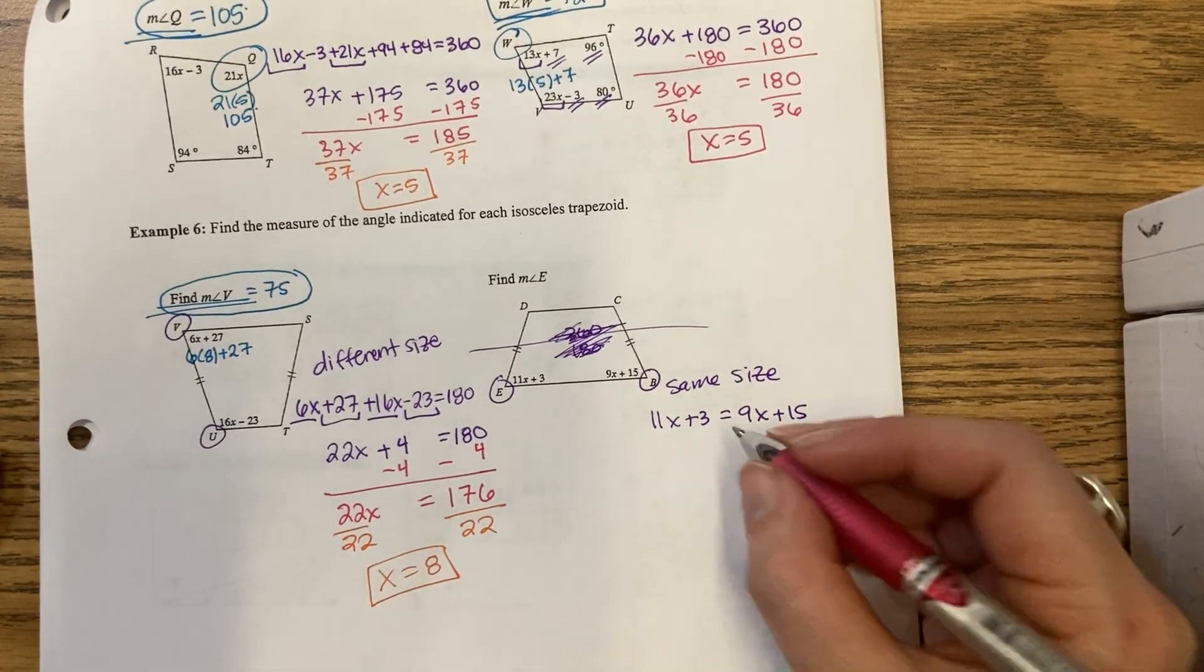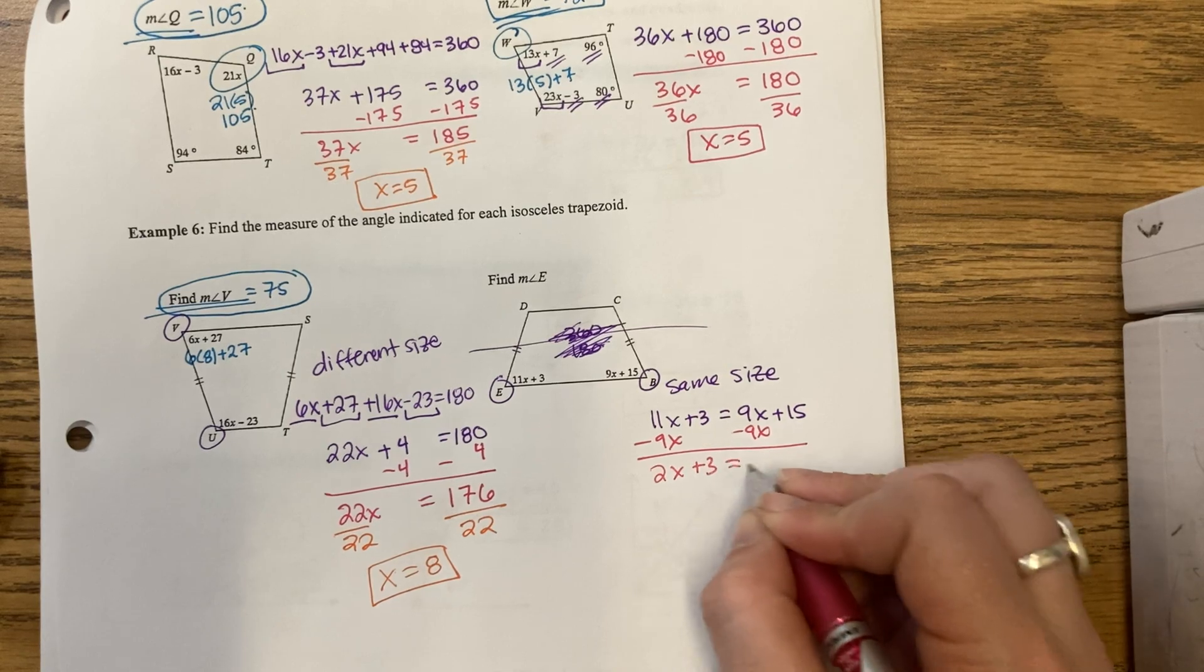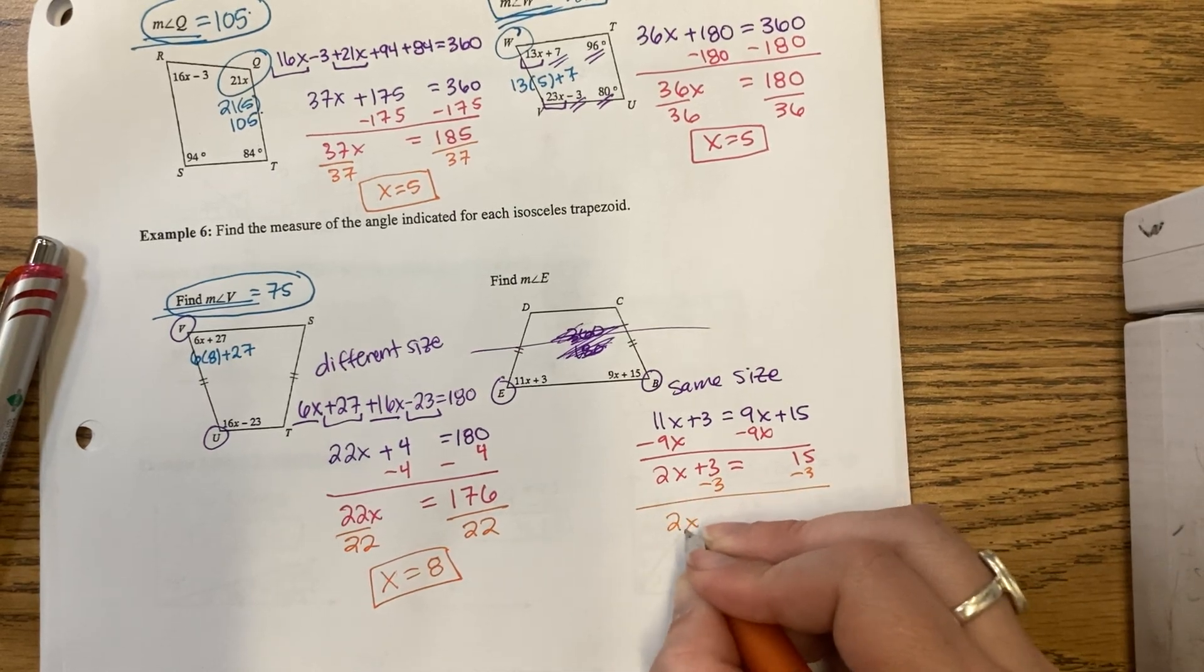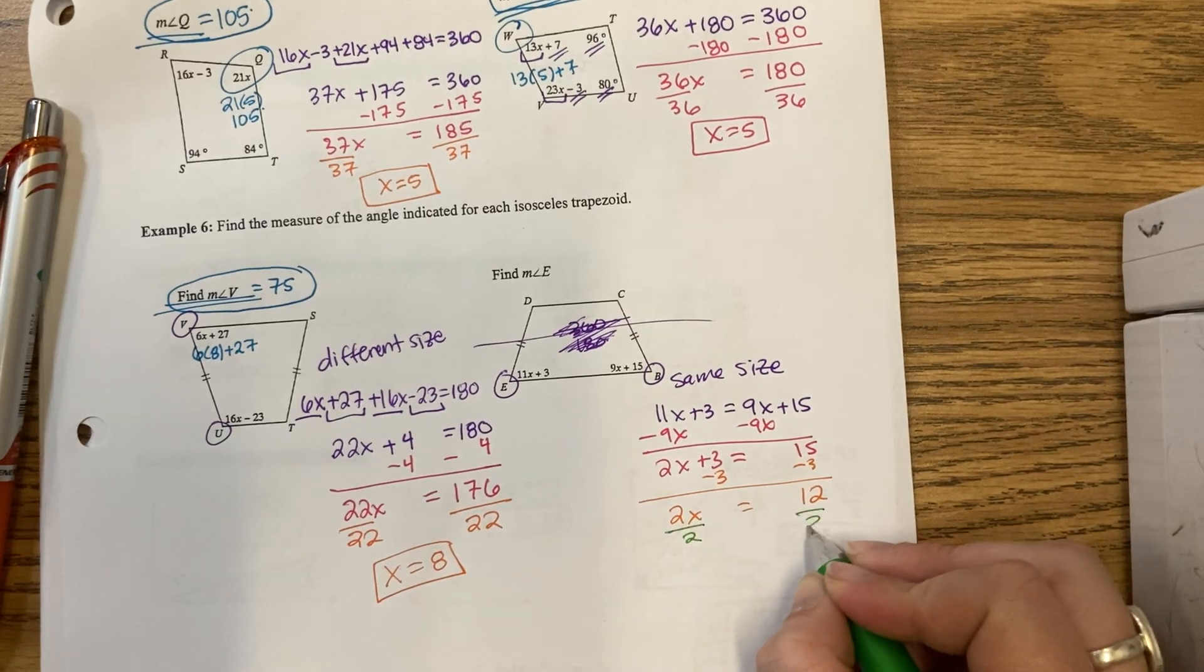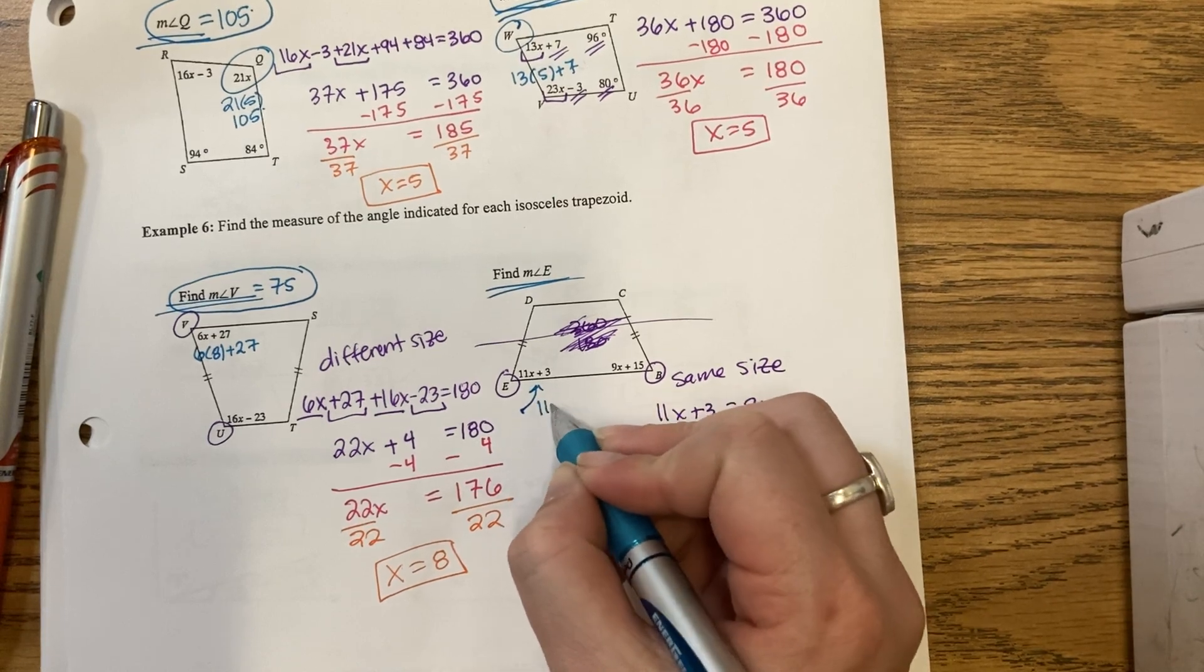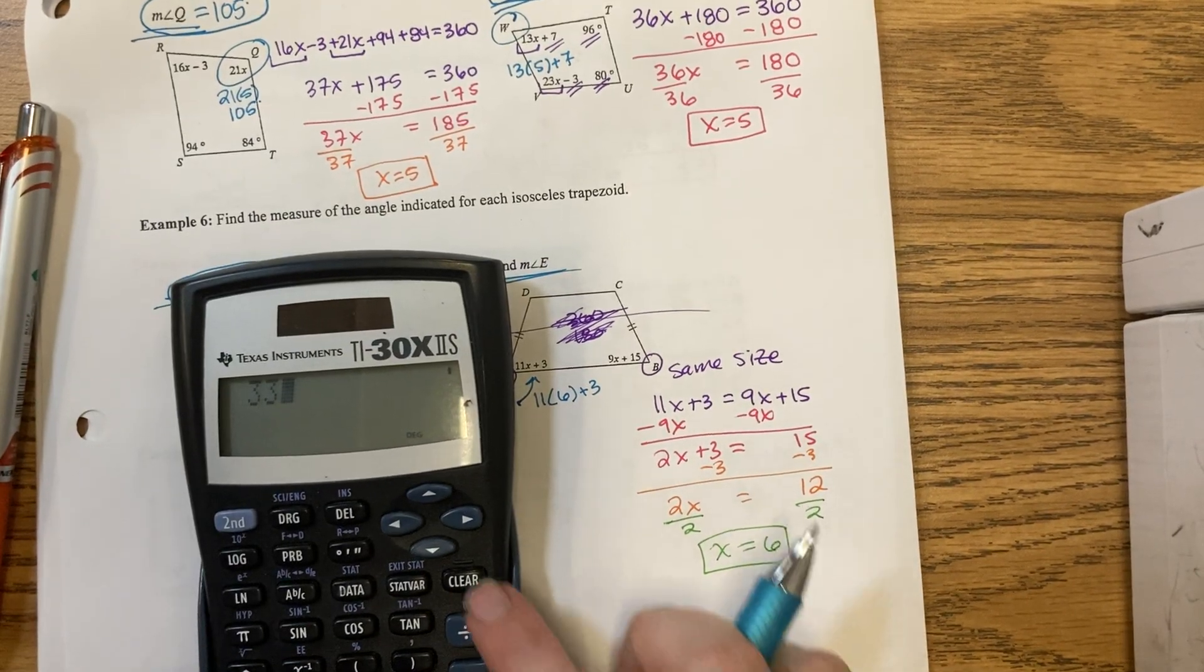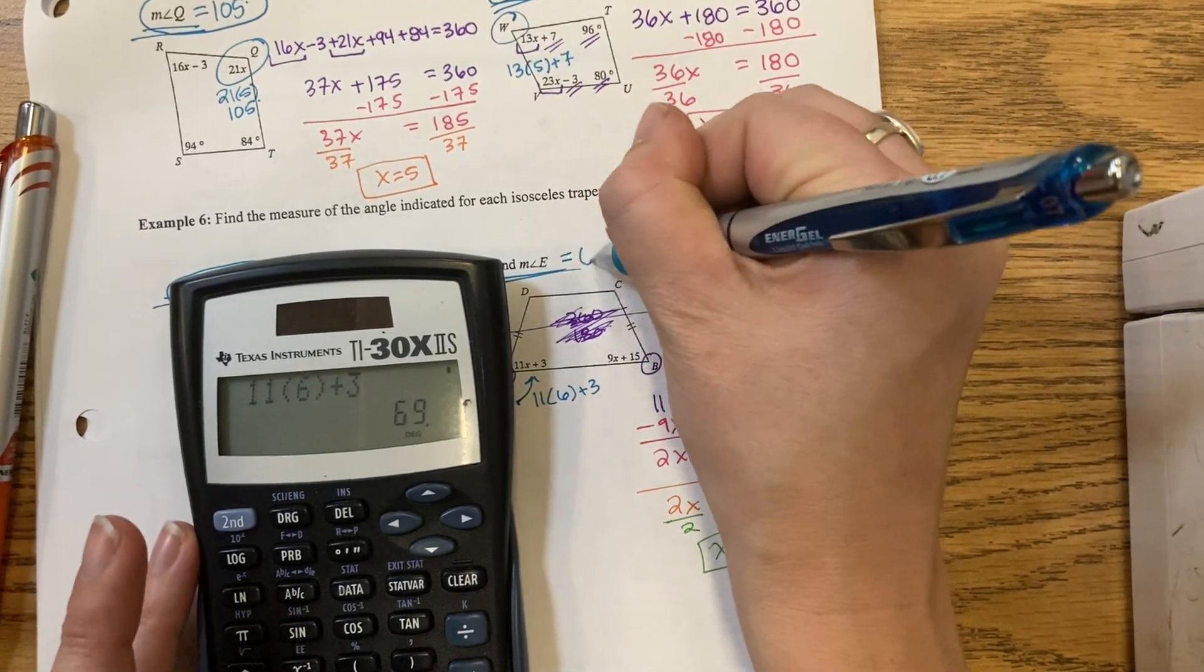They're the same size, so they're equal. We then minus the 9x. That makes 2x. Minus the 3. That makes a 12. And then divide by 2. X is 6. What is angle E? Angle E is right here. 11 times 6 plus 3 is 69 degrees.